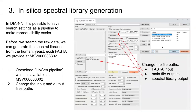Once you load that in, it's going to populate a few different things. You'll notice there are now four different setups. If you clicked through some of these, you would see that they each make their own spectral library — it's its own independent experiment. In this case, we're looking at generating an mTReK library.